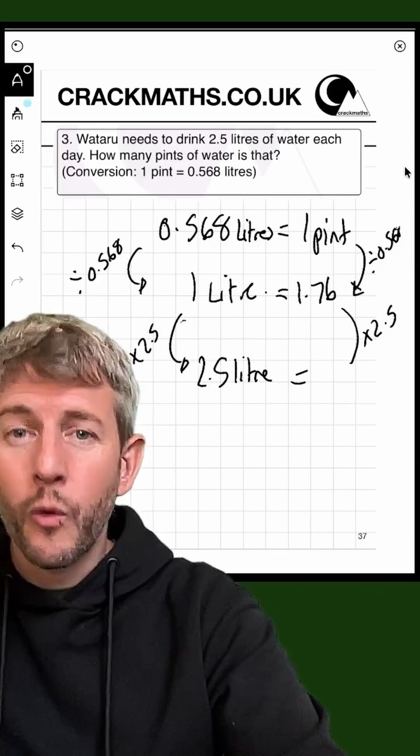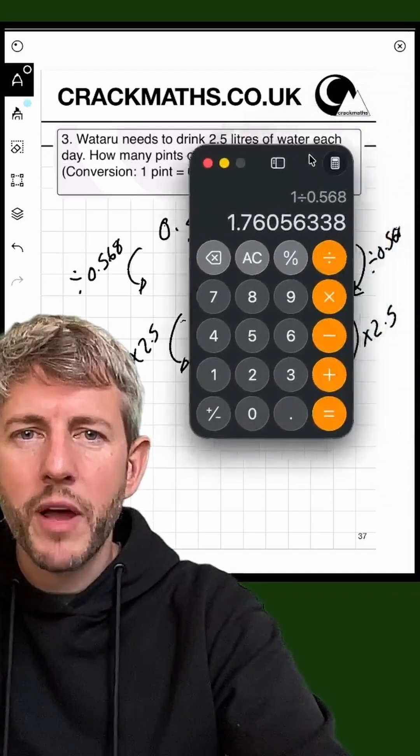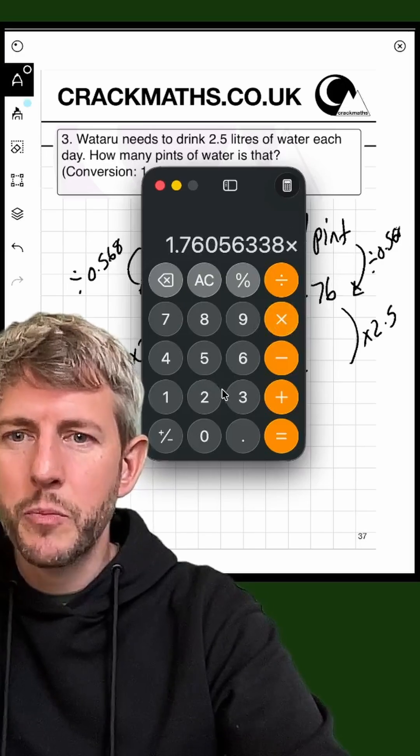Now we know that one litre is 1.76 pints. What we have to do is multiply this answer by 2.5 in order to get the 2.5 litres.